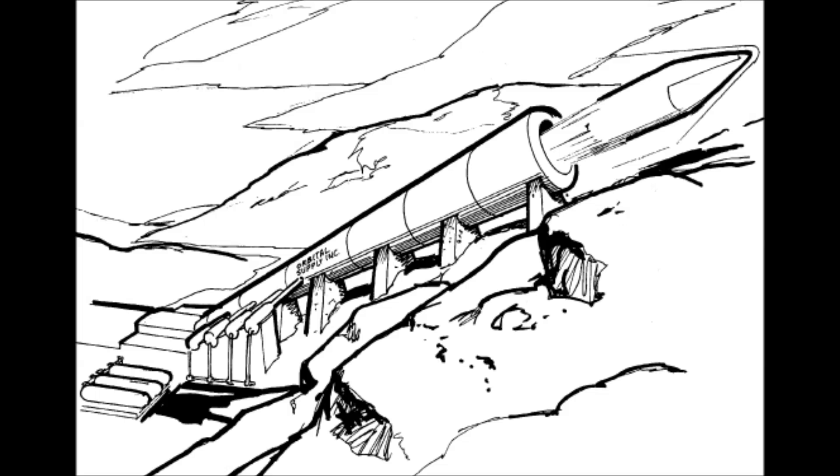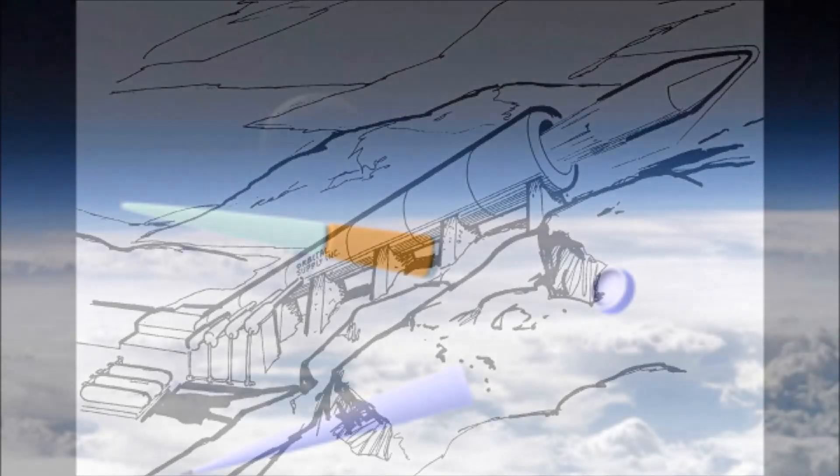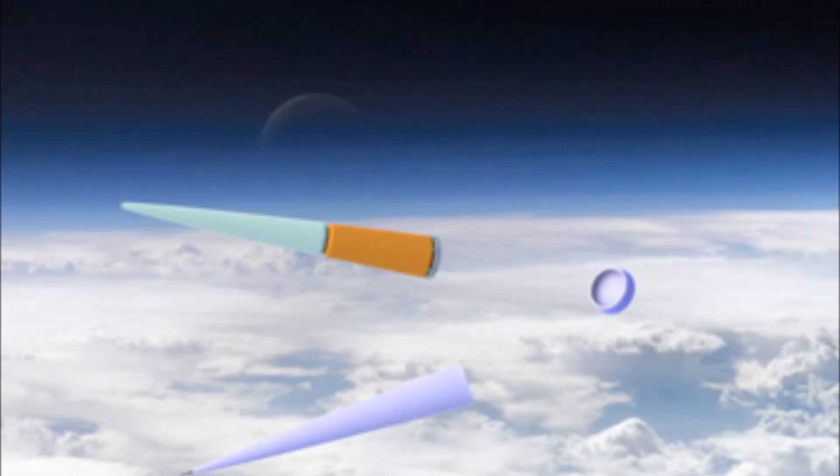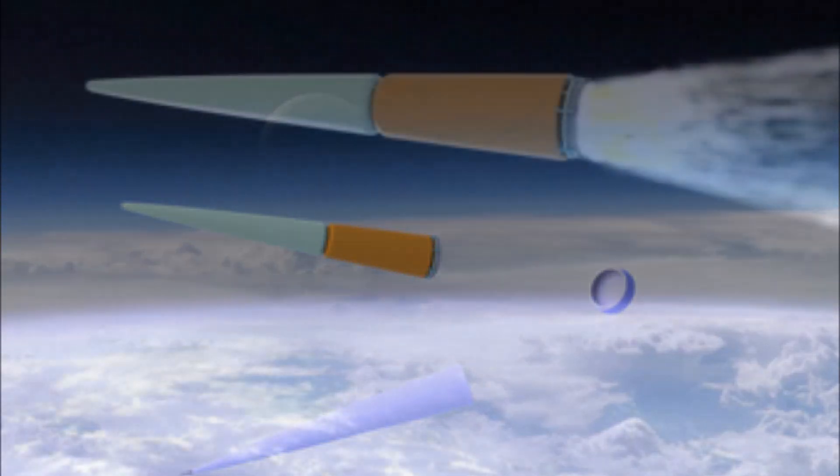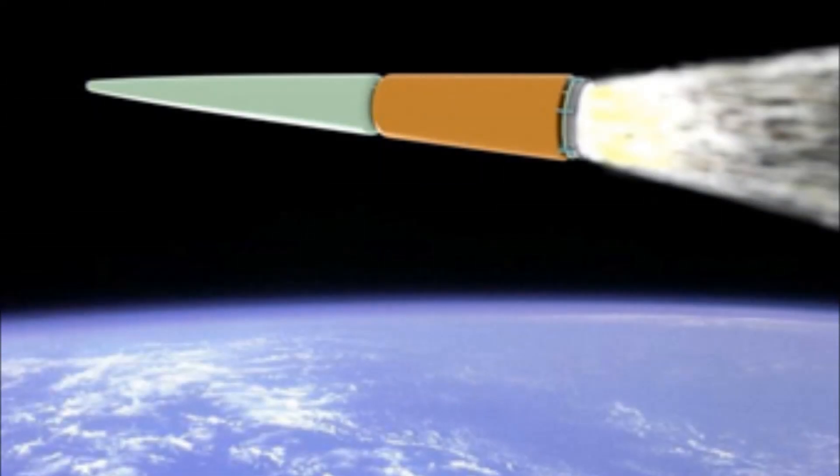And so, assuming you can get the projectiles up to speed, you still have a few minor complications. Depending upon your design, the end of the barrel may still be deep inside the Earth's atmosphere. So, as soon as you leave it, you're going to have to contend with re-entry-style fireballs on your ascent into space. And once there, of course, you need some sort of rocket to adjust your projectile into a stable orbit.